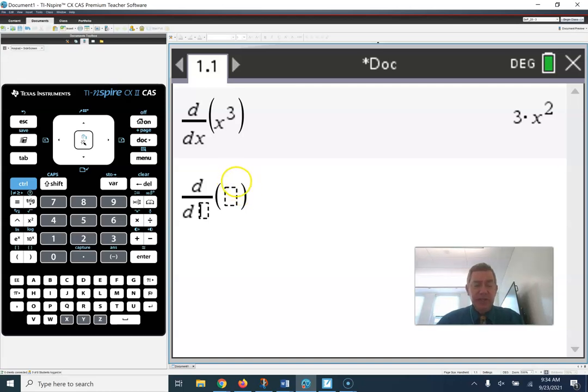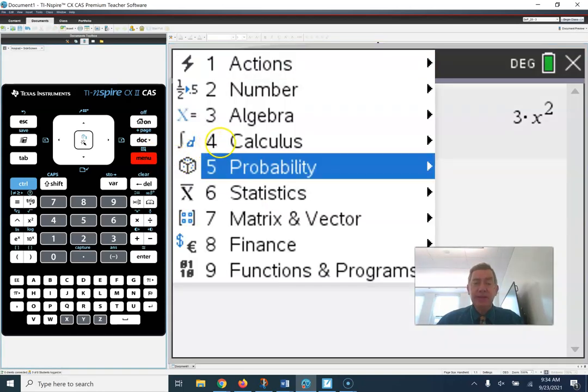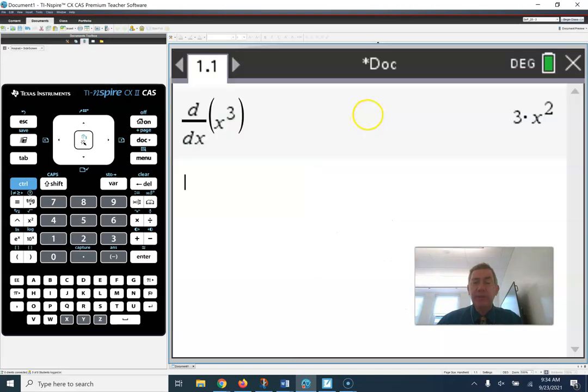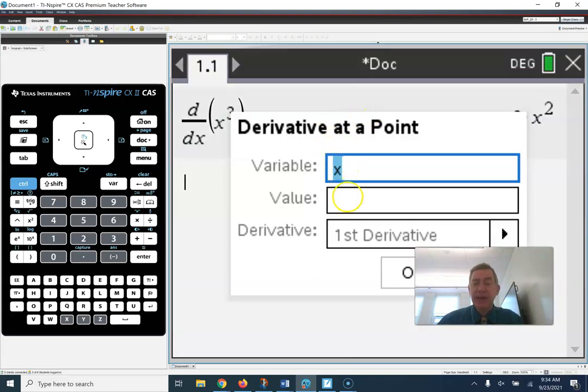If you did instead menu calculus derivative at a point, it will also ask you what the function is. If the variable is x, the value is maybe when x is 3, we'll say. You hit OK.